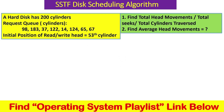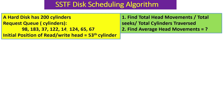In this example, a hard disk has 200 total cylinders, and the request queue contains cylinder numbers: 98, 183, 37, 122, and so on up to 67. The initial position of the read/write head is at the 53rd cylinder. We need to find the total number of head movements and the average head movements to service all these requests.